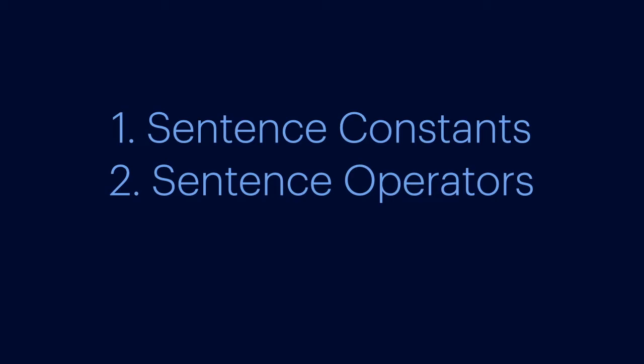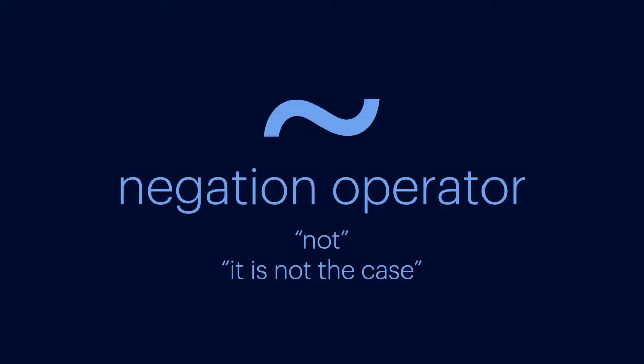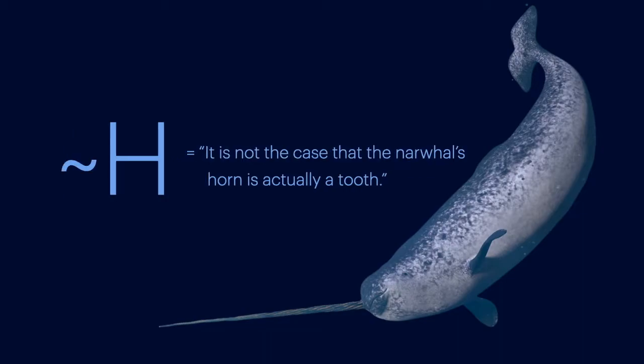The operators represent the five truth functions. Let's go through each one. This is a tilde. Your textbook may use this symbol instead, or some other notation. That's okay. The point is that it stands for the negation operator. The way to read this operator is not, or it is not the case. So for instance, this constant standing alone reads, the narwhal's horn is actually a tooth. But now it reads, it is not the case that the narwhal's horn is actually a tooth. Or more simply, the narwhal's horn is not actually a tooth.